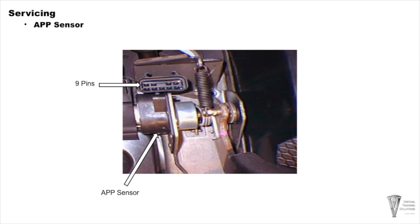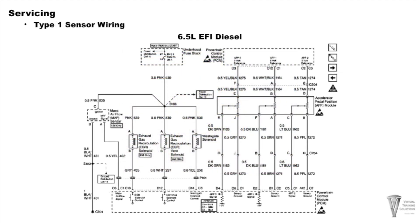Here is a look at a typical APP assembly. As you can see, your accelerator pedal is shown on the right with the electrical connection in the upper left. This is a look at the 6.5 diesel, which was the first unit to go to drive-by-wire. This one uses three potentiometers built into the APP unit. We call it a type 1 sensor wiring where all three feed directly into the PCM to tell us what throttle position you've actually attained.